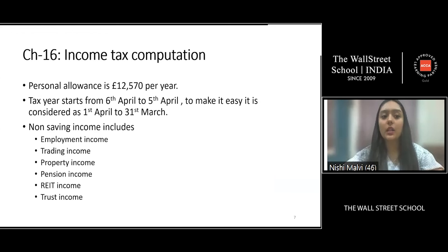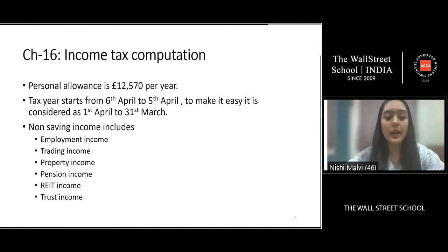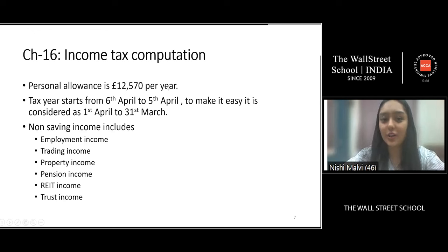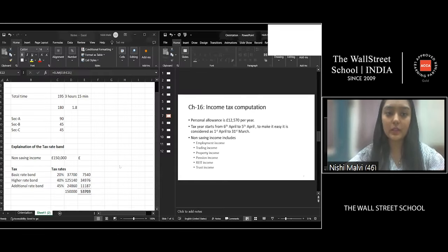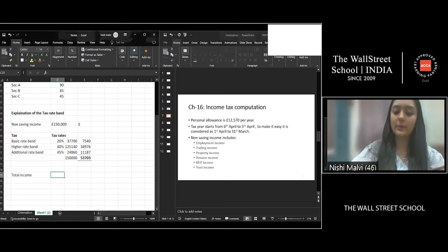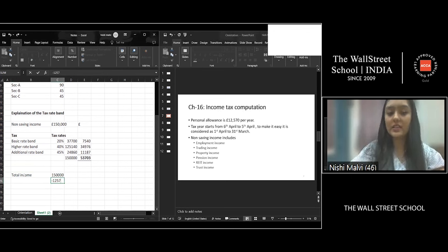Personal allowance is £12,570 per year per person. This is deducted from your total income — not from each individual income source separately. If a person has employment income, trading income, and other income, the personal allowance is applied to the total combined figure.